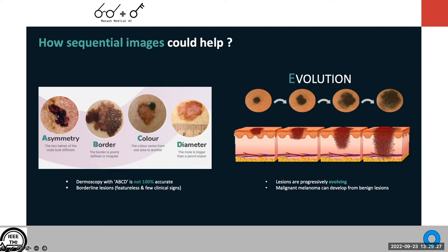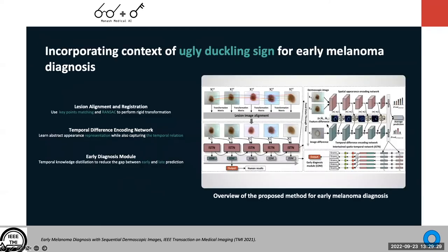To track progressive melanoma, we build a temporal-spatial network to capture lesion growth. The network includes a preprocessing step to align and register skin lesions together, enabling accurate capture of boundary and color changes. We also have a temporal distillation model to distill late-stage knowledge back to early stages, because our goal is early skin cancer detection.